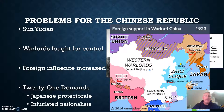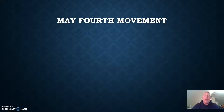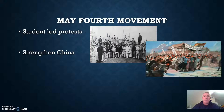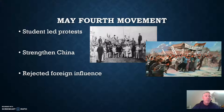In response to this, you have the May 4th movement. It began as student protests. The primary goal of the protesters was to strengthen China — they wanted to build China back to the glory days of what it used to be. They figured the primary way to do this was to reject foreign influence, not only from the West, but also from Japan.